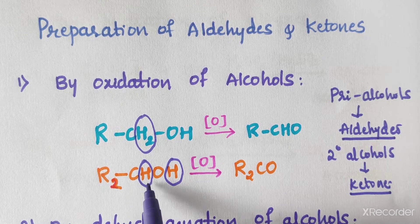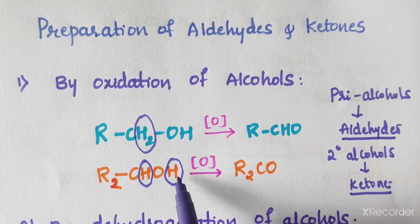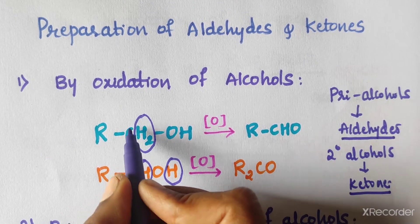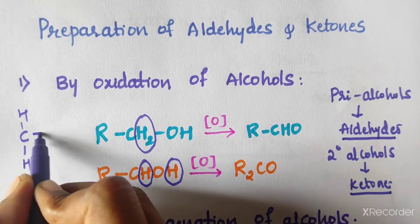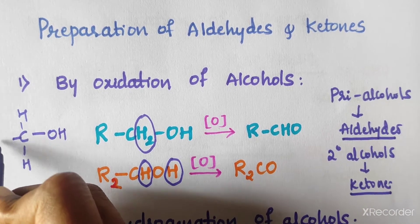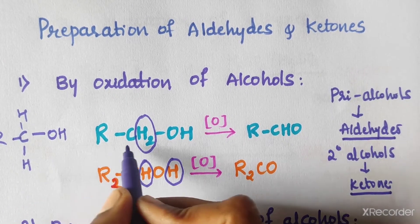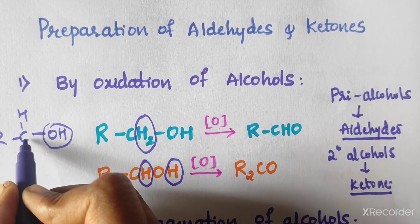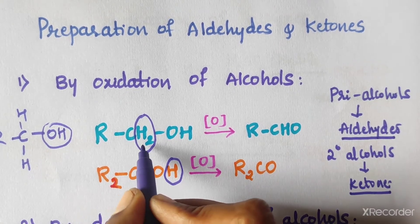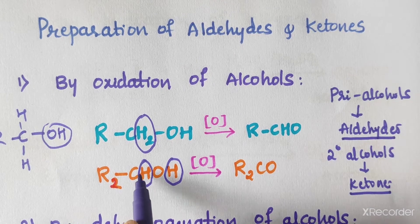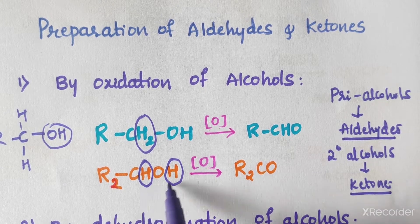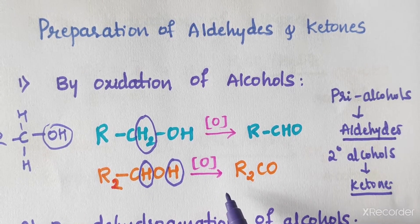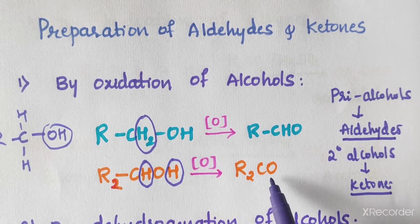Secondary alcohols have the general formula R2CHOH, where the carbon bearing the OH group is attached to two R groups. Secondary alcohol on oxidation by using CrO3 gives a ketone, R2C=O.